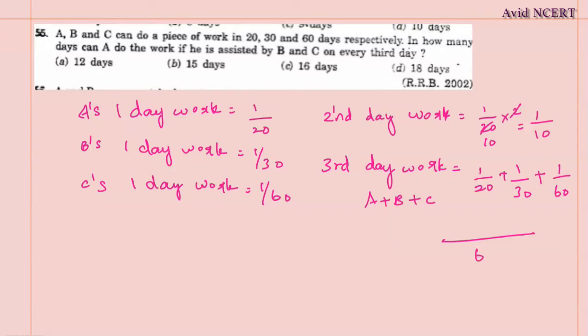When adding this, LCM is 60. 20 times 3 is 60, so 3 times 1 is 3. 30 times 2 is 60, so 2 times 1 is 2. 60 times 1 is 60, so 1 times 1 is 1. Therefore, 3 plus 2 plus 1 is 6/60, which simplifies to 1/10.